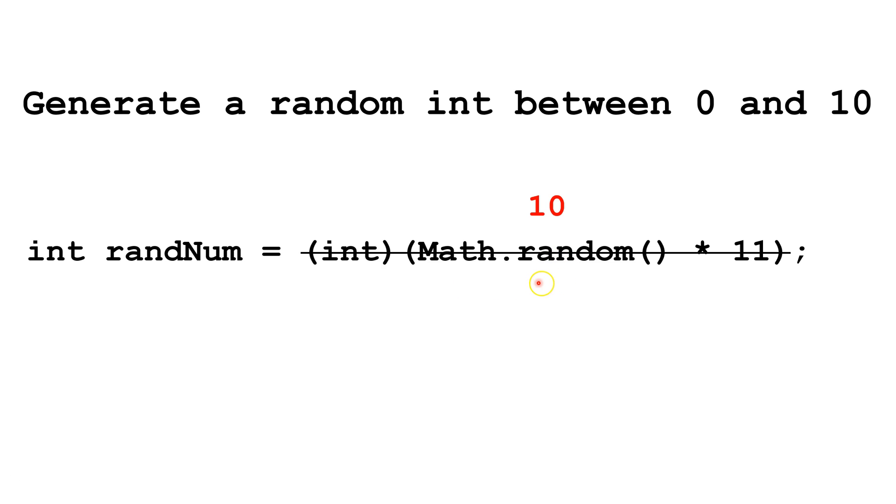If Math.random were somewhere between 0 and 0.999, we would get a number between 0 and 10.